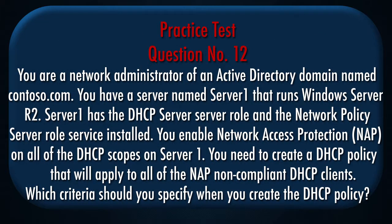Question number 12: You are a network administrator of an Active Directory domain named Contoso.com. You have a server named Server1 that runs Windows Server 2012 R2. Server1 has the DHCP server role and the Network Policy Server role service installed. You enable Network Access Protection (NAP) on all of the DHCP scopes on Server1.